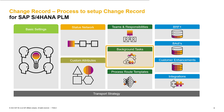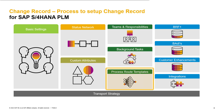The second question regarding the process route is: do you need background tasks? If yes, what kind of background task is required? A background task could be, for example, to automatically execute a status switch for the change record. Also, the question about the process route template is important. Do you want to have global process route templates available? If yes, how should they look, and which teams and users should be considered in which template?